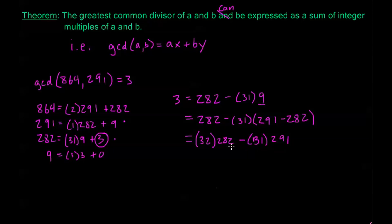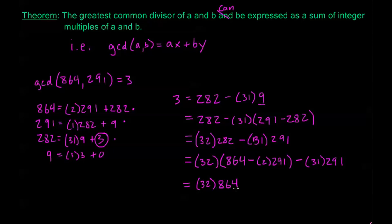Now I can substitute in for 282 using our very first equation: 282 is equal to 864 minus 2 times 291. So this becomes 32 times (864 minus 2 times 291) minus 31 times 291. Simplifying: I have positive 32 times 864, and 32 times negative 2 is negative 64 minus 31, giving negative 95 times 291. So my x is 32 and my y is negative 95.